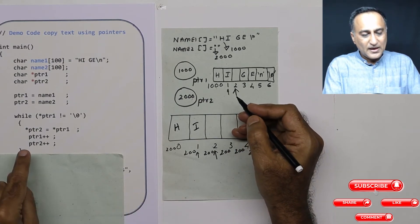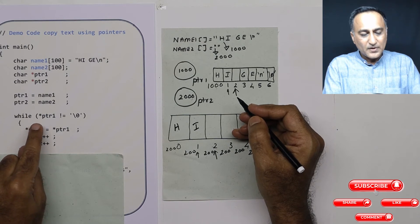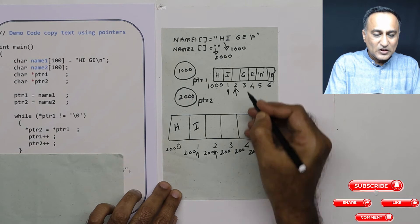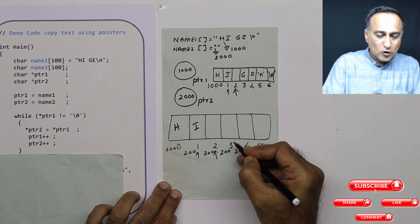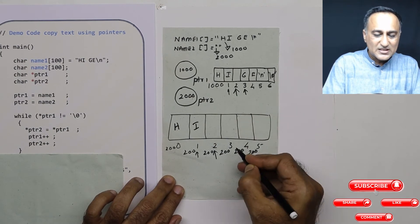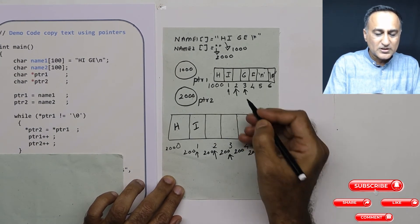Then ptr1 and ptr2 get increased, so ptr1 is here, ptr2 is here. Then again when I go here, I come back to the loop after I increase this. Then this particular space has been copied. Now when I increase ptr1 and ptr2, ptr1 is here, ptr2 is at 2003.